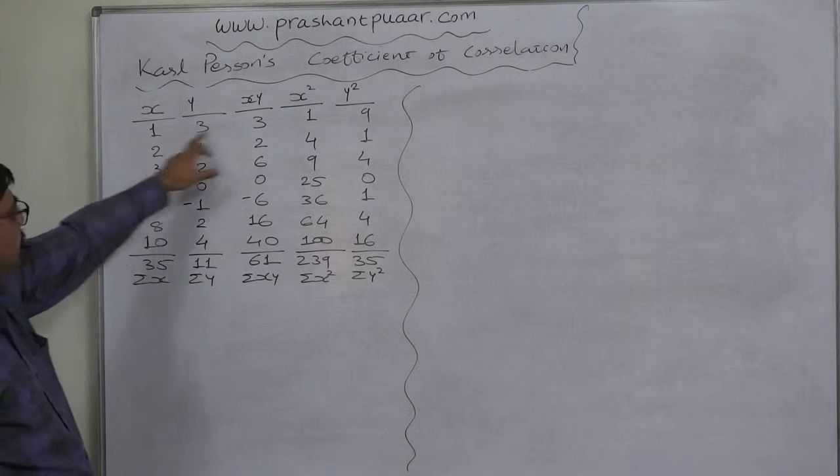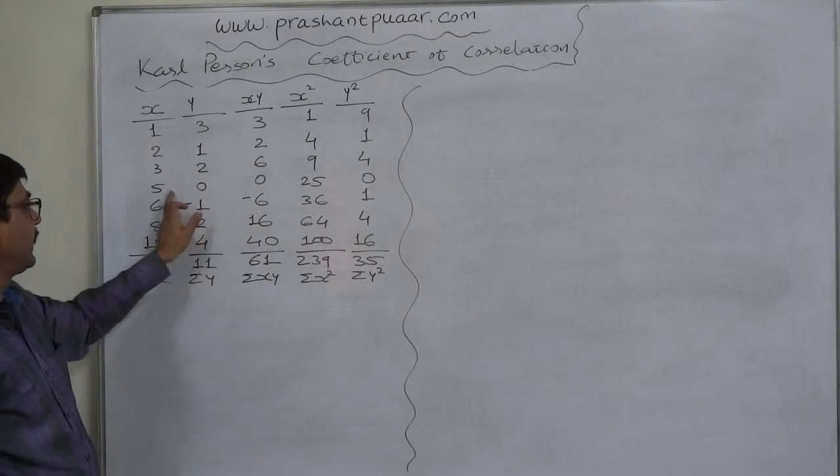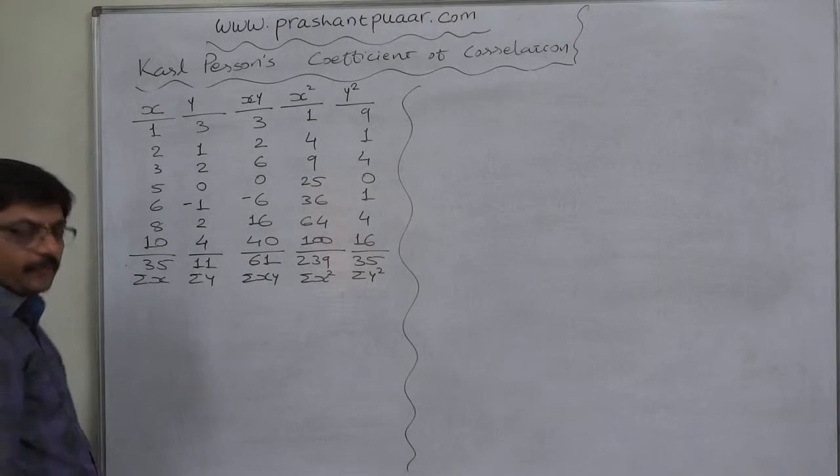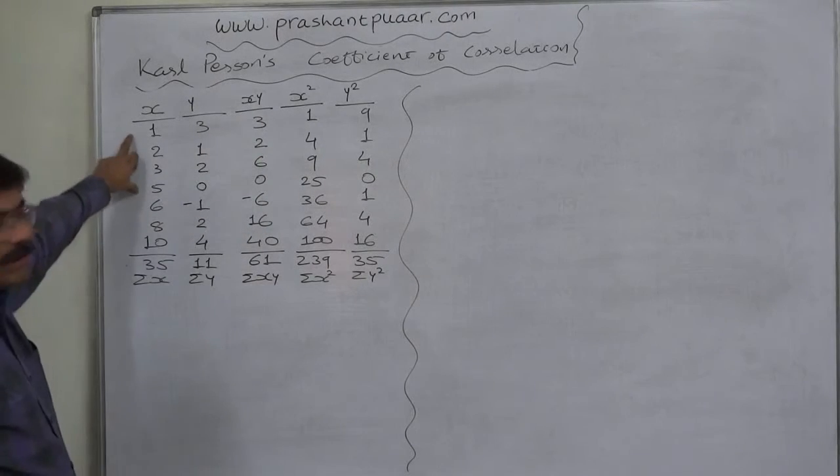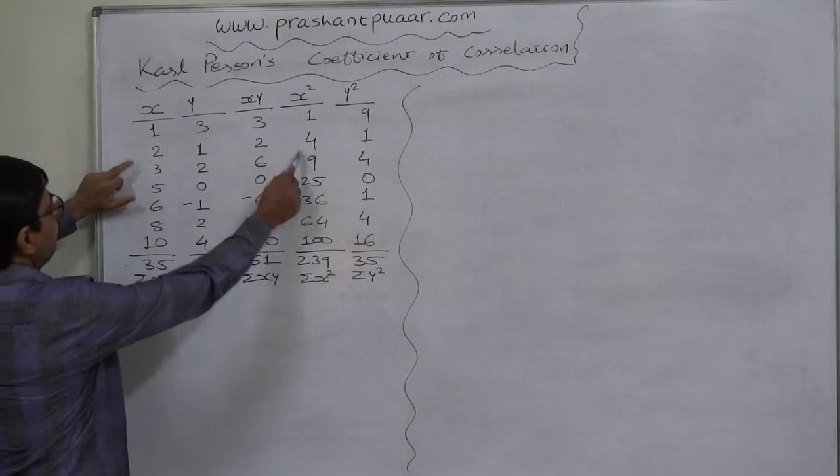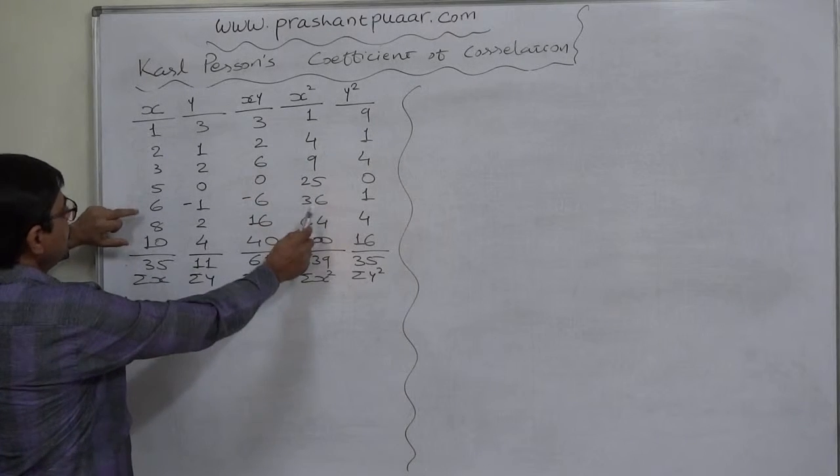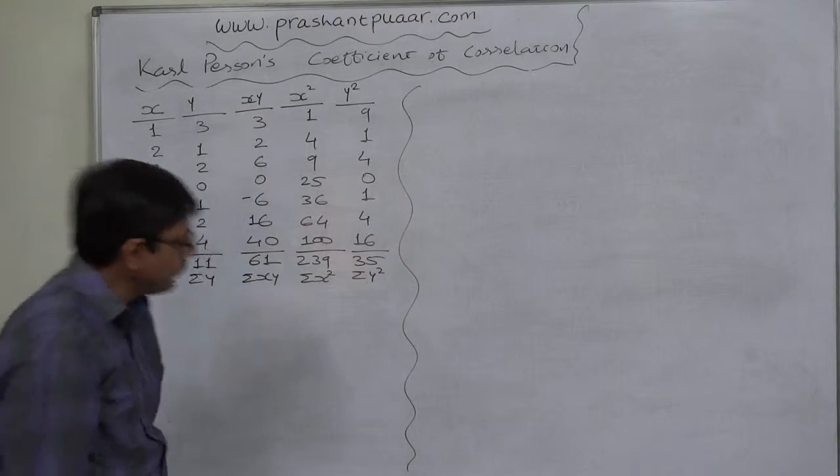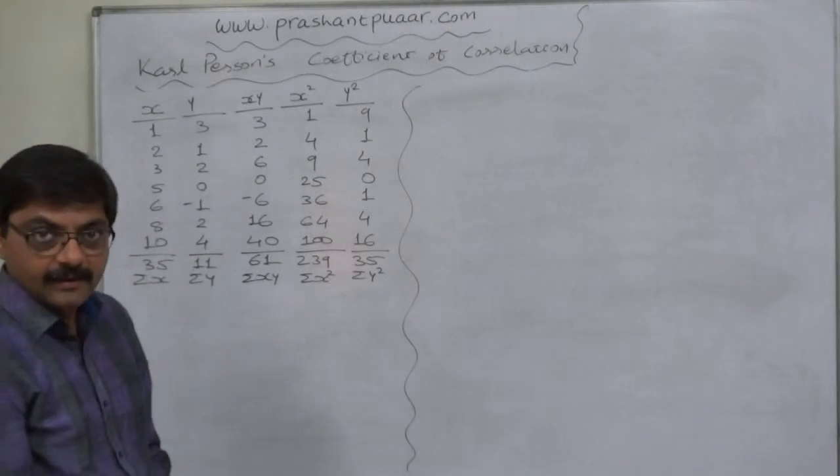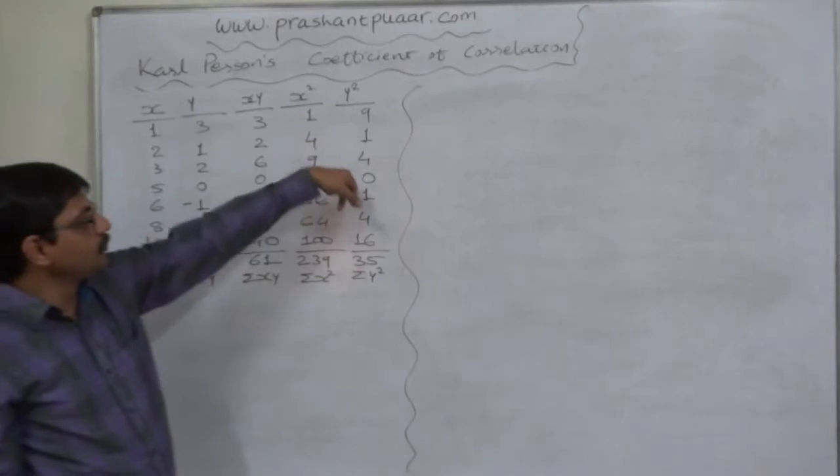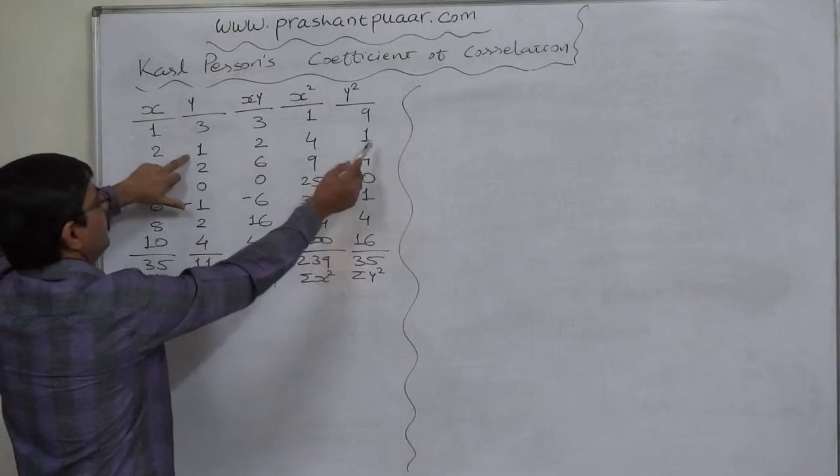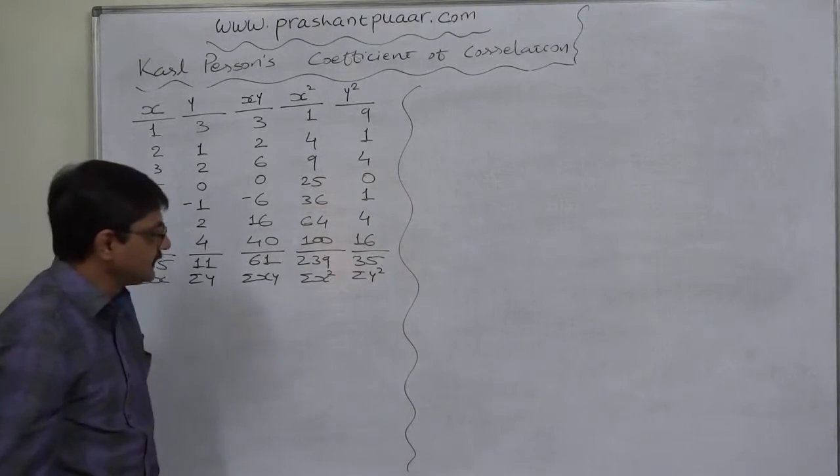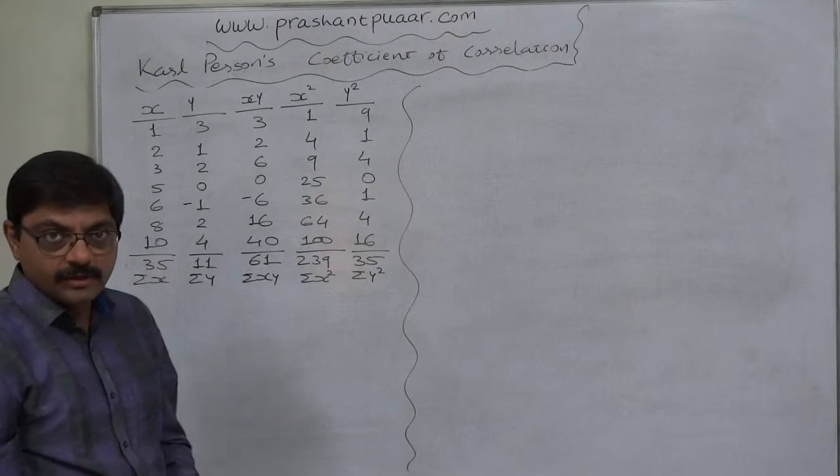Let us first find XY: 1 into 3 is 3, 2 into 1 is 2, 3 into 2 is 6, 5 into 0 is 0, 6 into minus 1 is minus 6, 8 into 2 is 16, 10 into 4 is 40. X squared values: 1 squared is 1, 2 squared is 4, 3 squared is 9, 5 squared is 25, 6 squared is 36, 8 squared is 64, and 10 squared is 100. Individual squared values and their summation comes to 239.